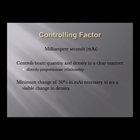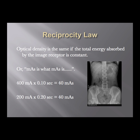So mAs is the controlling factor for density, but to see any visible change at all you need at least a 30% change in mAs — either up or down. If you want to make the film lighter, you need to go down in mAs by at least 30%. If you want to make the film darker to the point where you can actually see a difference, you need to go up at least 30% in mAs.